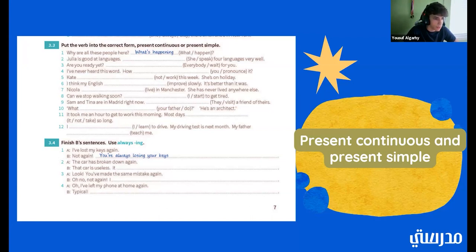Nicola. Live in Manchester. She has never lived anywhere else. Nicola lives in Manchester. Good. Can we stop walking soon? I start to get tired. Good. I am starting to get tired. Good. Sam and Tina are in Madrid right now. They visit a friend of theirs. They are visiting a friend of theirs. Good. Ten. What your father do. He's an architect. Okay. What does your father do? Good.